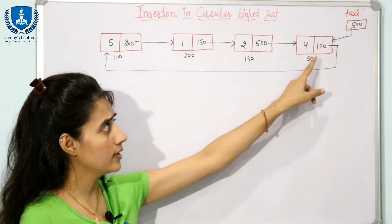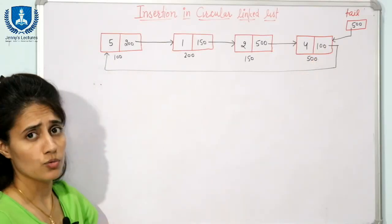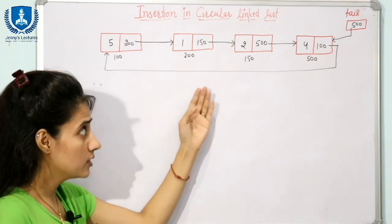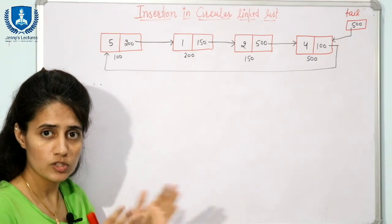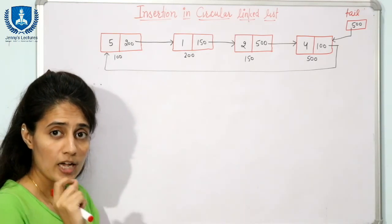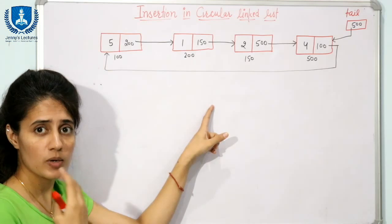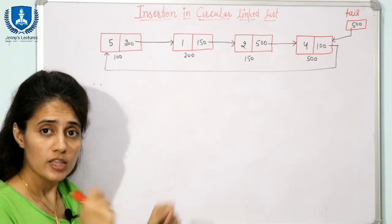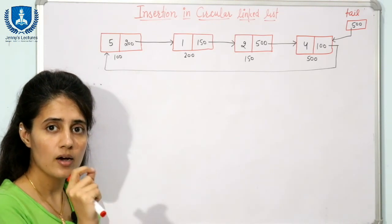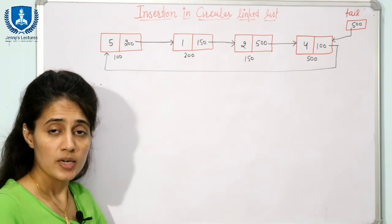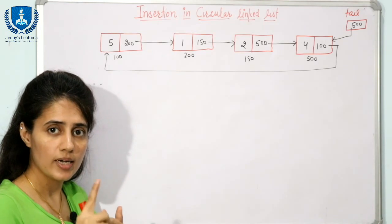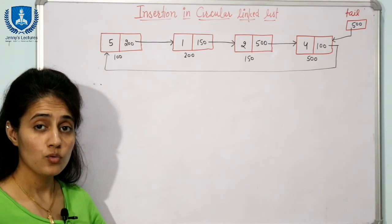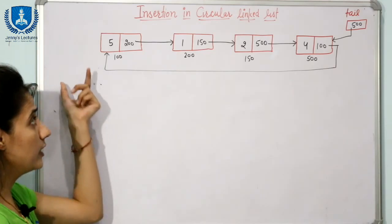In a circular linked list, the last node contains the address of the first node. The creation and traversal of circular linked lists were discussed in the previous video. In this video, we will see how to insert data in a circular linked list: insertion at the beginning, insertion at the end, and insertion at any specific position.